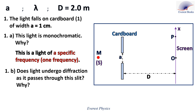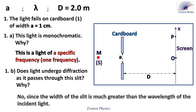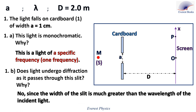Part 1B: does light undergo diffraction as it passes through this slit? Since the wavelength of visible light varies between 400 and 800 nanometers, this light does not undergo diffraction because the width of the slit is much greater than the wavelength of the incident radiation.